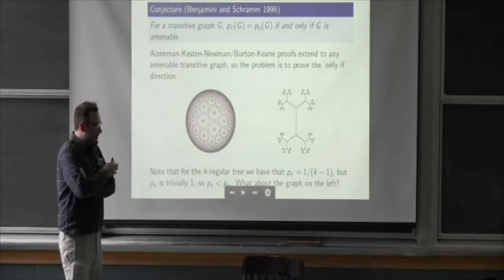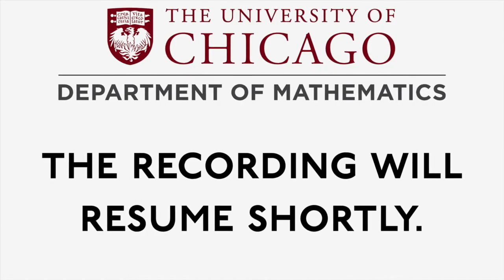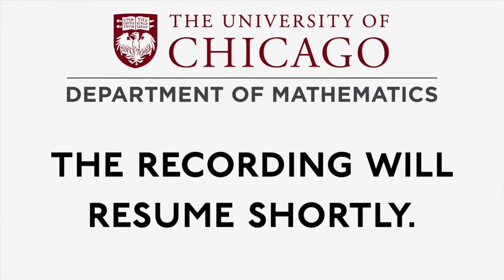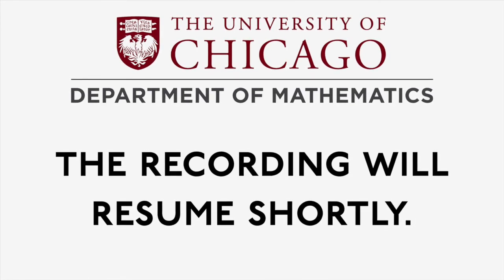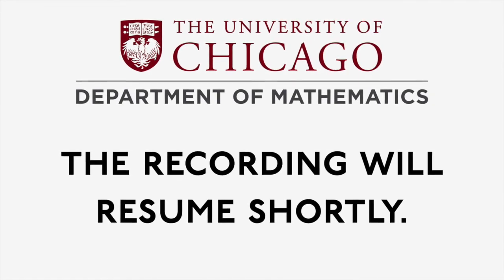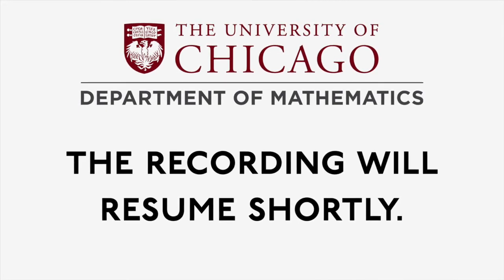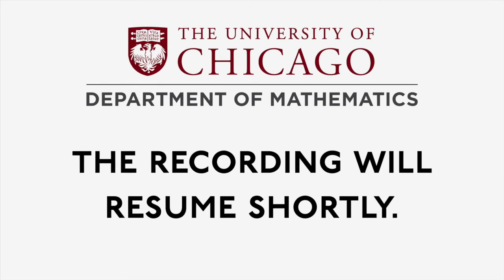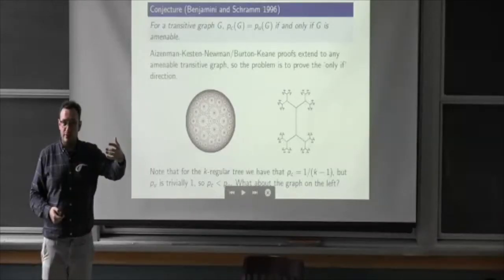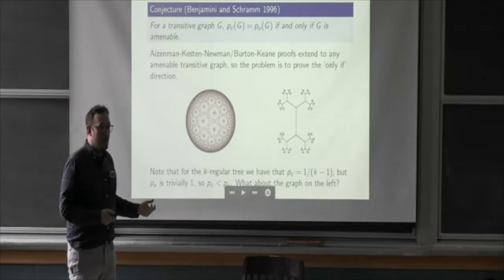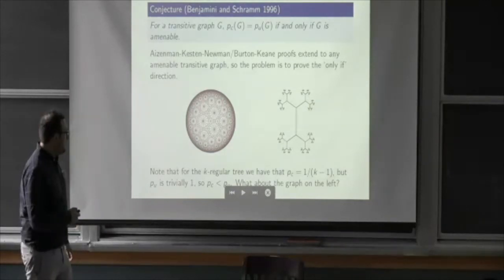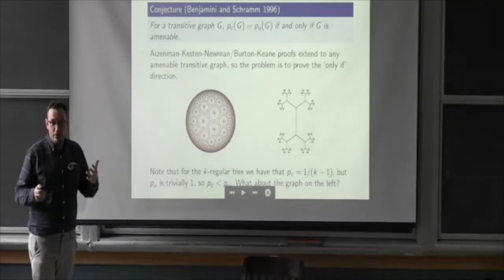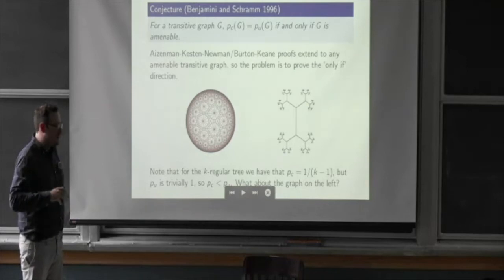One of the biggest conjectures in this area, due to Benjamini and Schramm, is that the converse of the Burton-Keane theorem is also true. Burton-Keane proved that any amenable transitive graph does not have a phase with infinitely many clusters. Benjamini and Schramm conjectured that on every non-amenable transitive graph, there should be a phase where you get infinitely many infinite clusters. For a tree this is easy — on the 3-regular tree, PC is one-half, and from one-half to one you get infinitely many clusters, never a unique infinite cluster unless p equals one. There are examples like tessellations of the hyperbolic plane where you actually get all three phases.